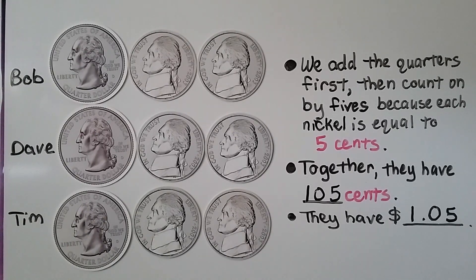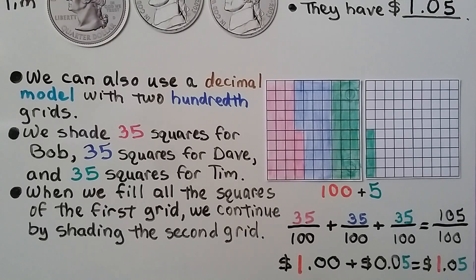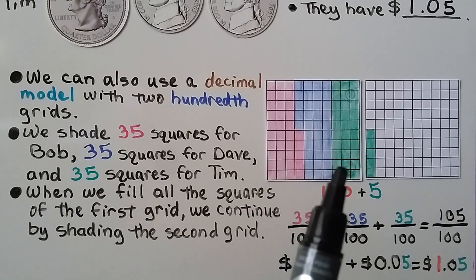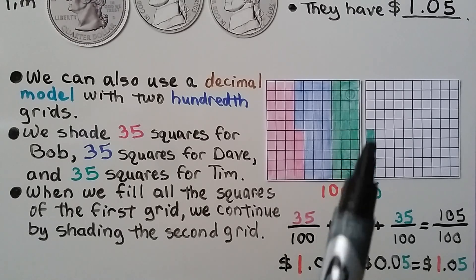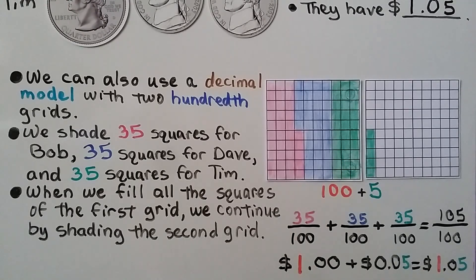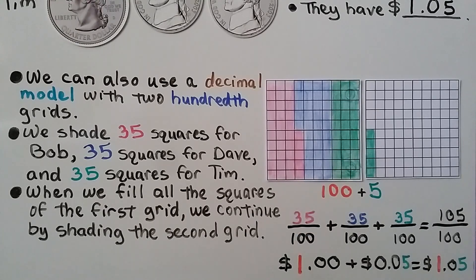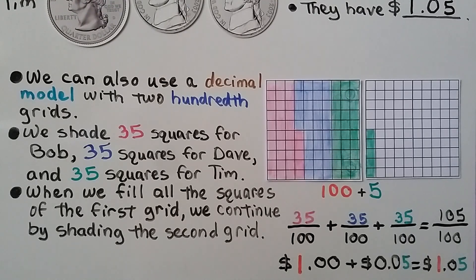We can write this as dollars and cents: 105 cents equals one dollar and five cents. We can also use a decimal model with two hundredths grids, shading 35 squares for Bob, 35 for Dave, and 35 for Tim, continuing into the second grid. As fractions: 35 hundredths + 35 hundredths + 35 hundredths = 105 hundredths, which is one dollar and five cents.